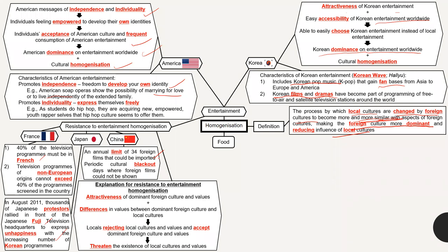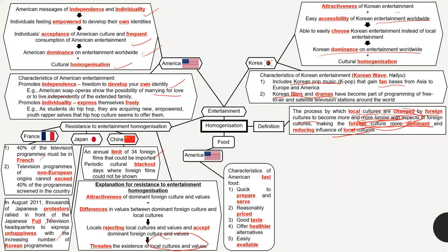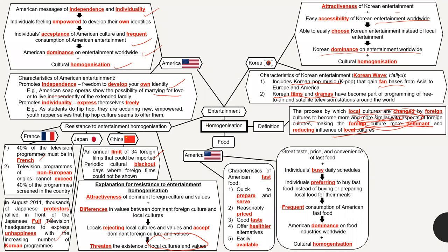These examples show that some countries resist cultural homogenization because they believe local culture is a very important part of their identity and values. The same applies to food — American fast food chains like McDonald's are popular worldwide because they are convenient, but some people resist this. In Italy, people protested against McDonald's because they felt it threatened Italian food culture. In Singapore, we are quite open to foreign culture while still protecting local productions — MediaCorp, for example, is unlikely to shut down.